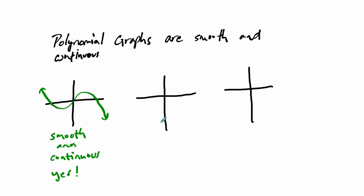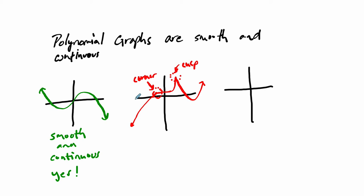Now what if you have something like this? It's going along, it's smooth, and all of a sudden it takes a sharp turn, goes smooth, and then cuts right back, and then smooth everywhere else. The two issues here are this sharp turn and this sharp edge, which is kind of a rough edge. Sometimes you refer to these as a cusp — a really sharp turn — or a corner. Those aren't necessarily objective definitions; they're just words describing parts that are not smooth. This is not a smooth graph, so it's not a polynomial graph.